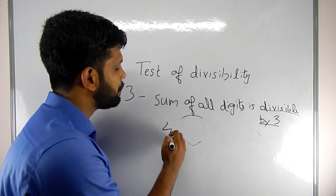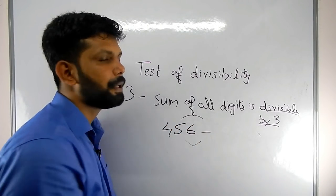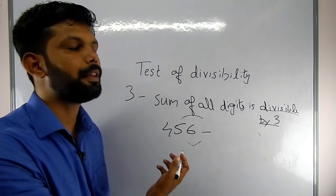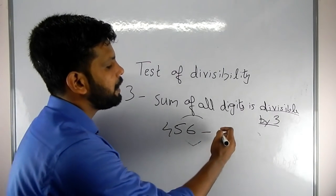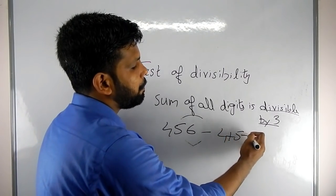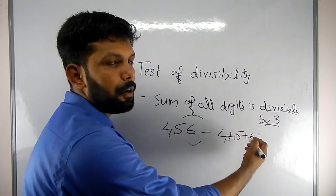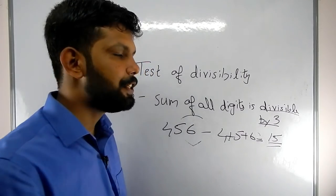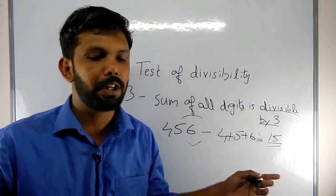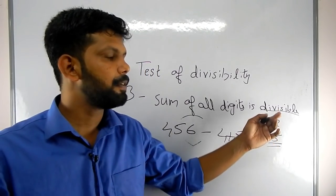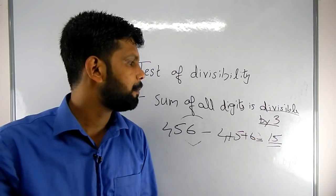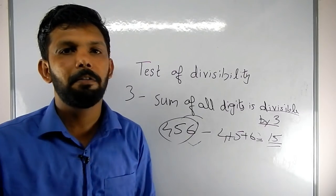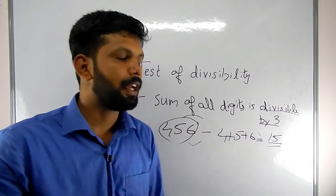Let's check another number: 456. We check the digits — 4 plus 5 plus 6 equals 15. The sum of all digits is 15, and 15 is divisible by 3, so 456 is divisible by 3. That is the divisibility rule of 3.